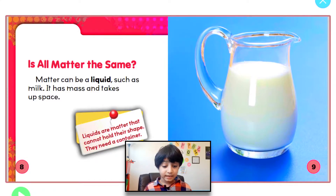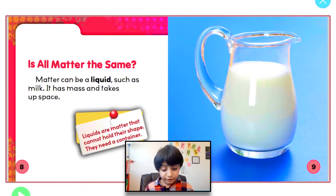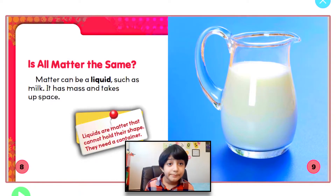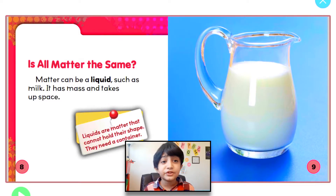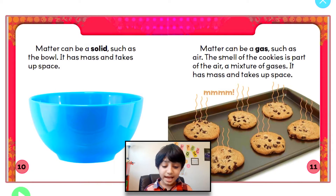Matter can be a liquid, such as milk. It has mass and takes up space. Liquids are matter that cannot hold their shape — they need a container. Liquids don't have a shape of their own; they take the shape of whatever container they are in, because they are not like a solid. Matter can also be a solid, such as the bowl. It has mass and takes up space.